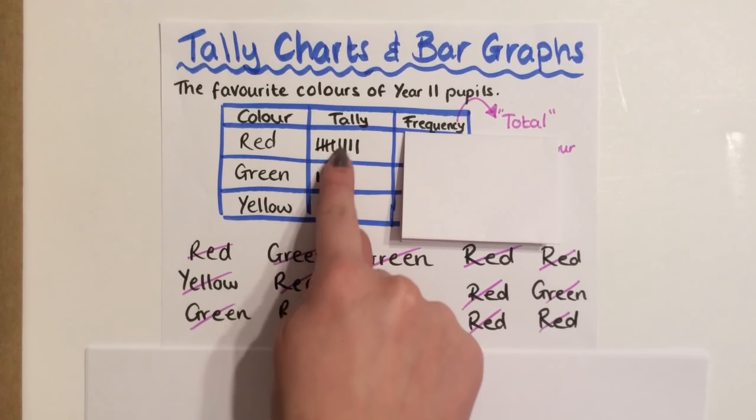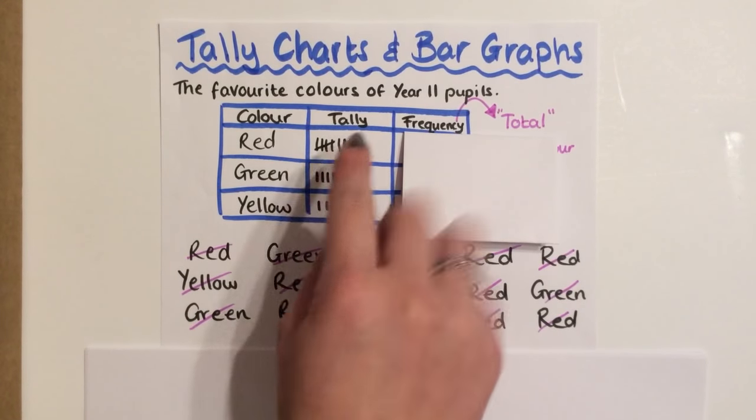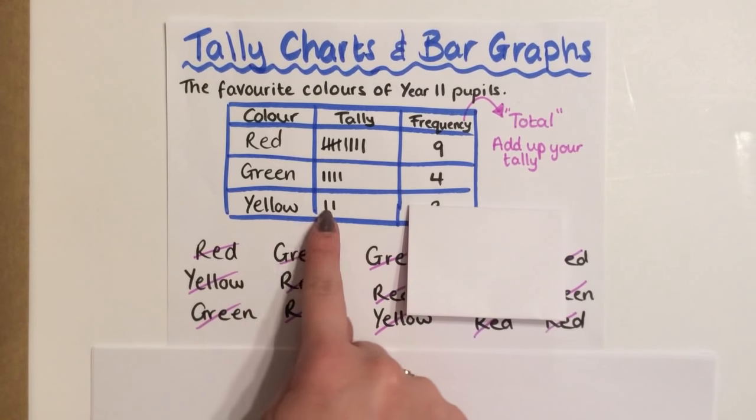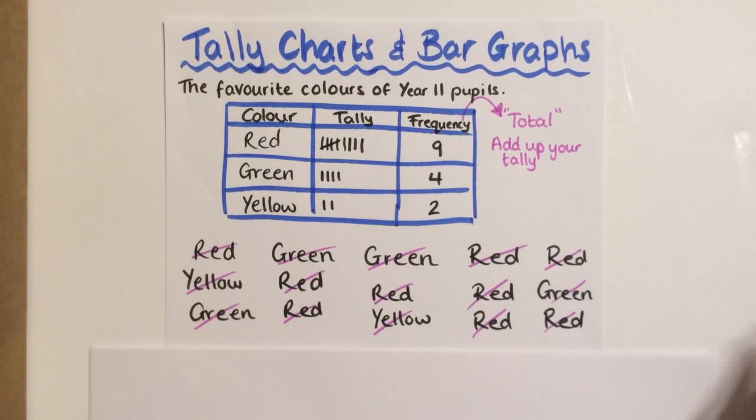So for this one, this little group here is 5, 6, 7, 8, 9. And then 1, 2 for yellow.